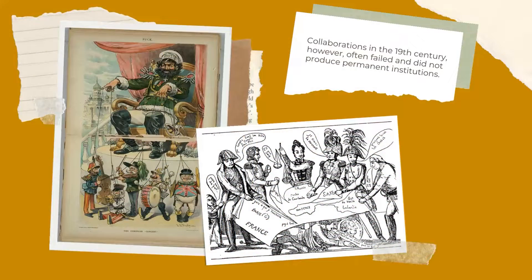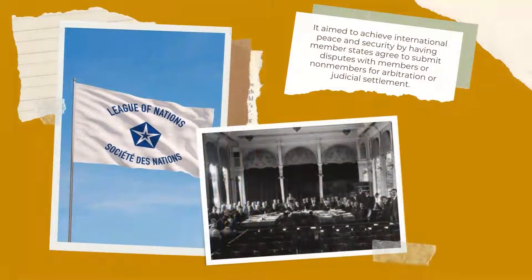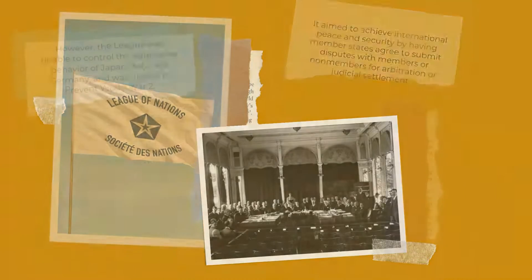Collaborations in the 19th century, however, often failed and did not produce permanent institutions. In the aftermath of World War I, a number of organizations were created to try to build a more peaceful world. The most important was the League of Nations, which aimed to achieve international peace and security by having member states agree to submit disputes with members or non-members for arbitration or judicial settlement.